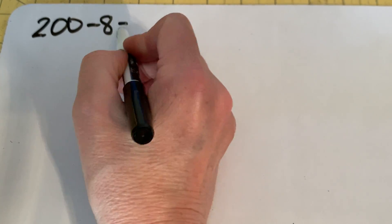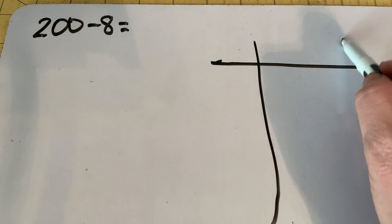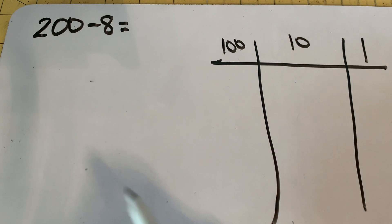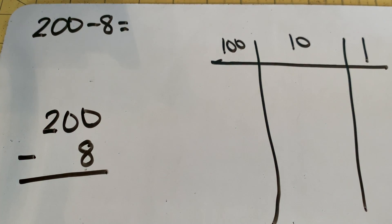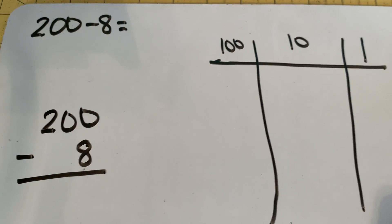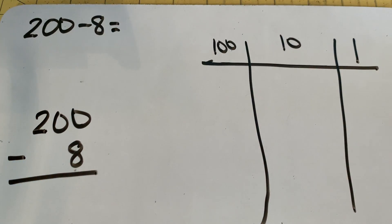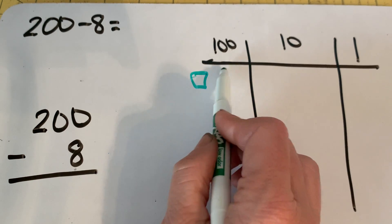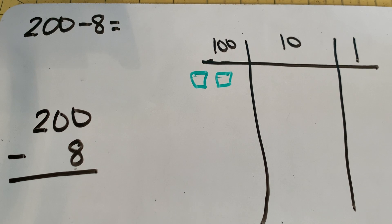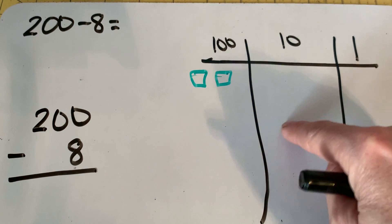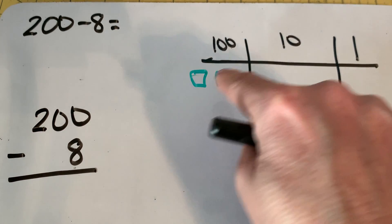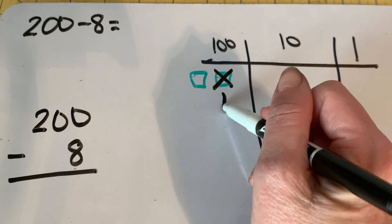Here's the first problem: 200 minus 8. We are subtracting, and we have hundreds, tens, and ones. We're going to put it into vertical format. I don't have any ones or tens to draw, but I do have two hundreds. Now we're going to subtract 8, but I don't have any ones to subtract from, so I need to decompose a ten. But friends, we don't have any tens, so we have to go one more place value — all the way over to our hundreds — and decompose one of those hundreds into tens.